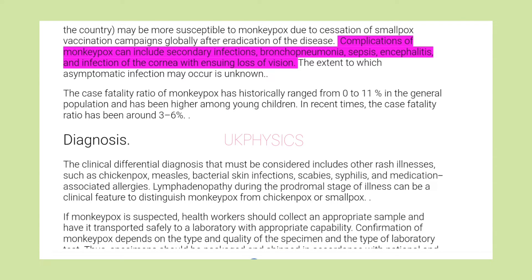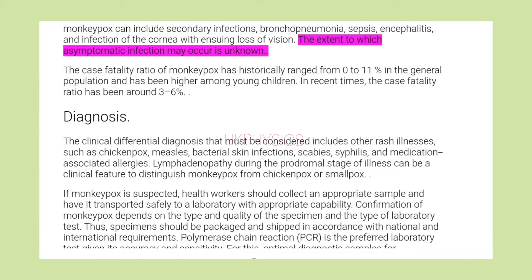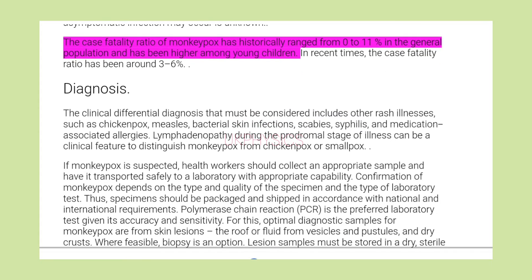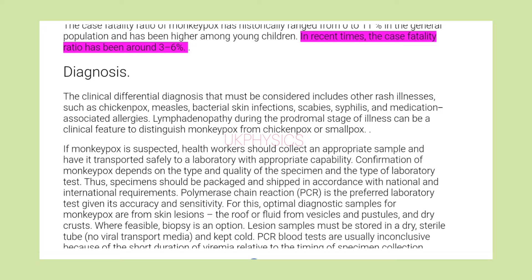Complications of monkeypox can include secondary infections, bronchopneumonia, sepsis, encephalitis, and infection of the cornea with ensuing loss of vision. The extent to which asymptomatic infection may occur is unknown. The case fatality ratio of monkeypox has historically ranged from 0 to 11% in the general population and has been higher among young children. In recent times, the case fatality ratio has been around 3 to 6%.